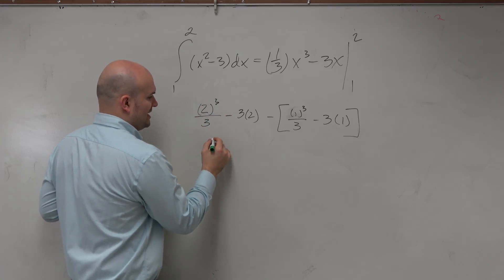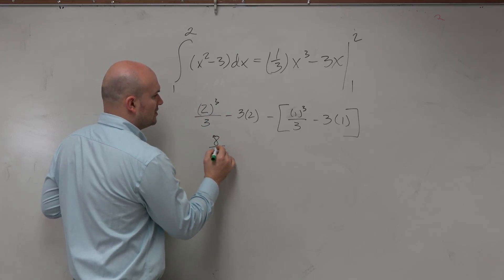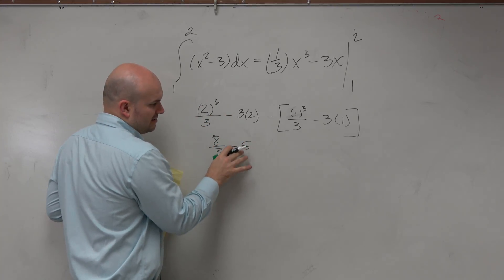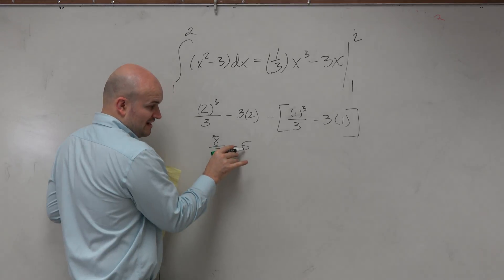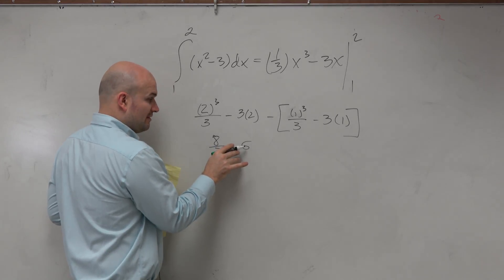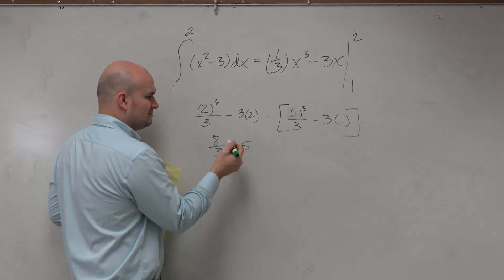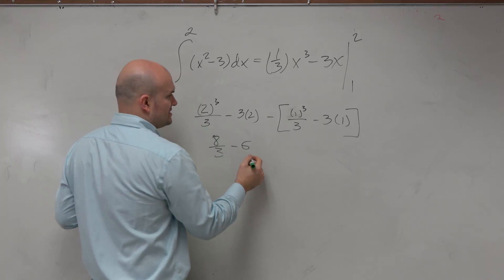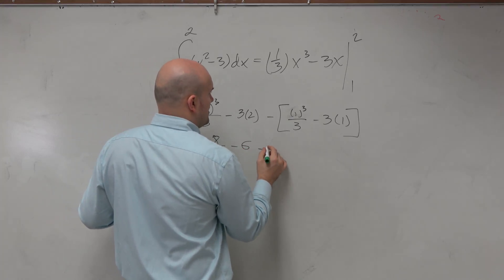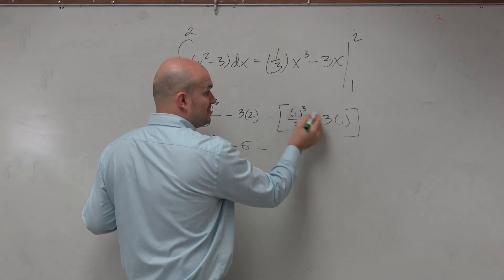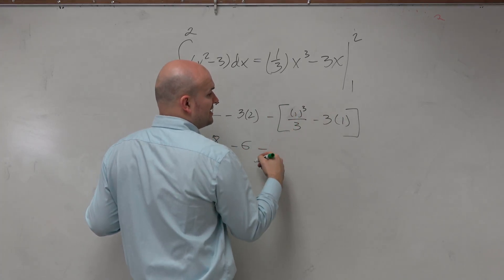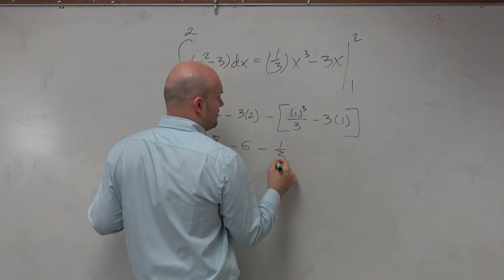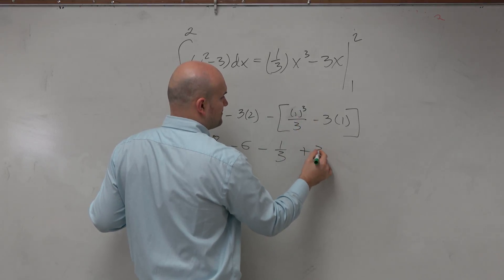2 cubed is going to be 8 over 3 minus 6. And then you distribute to eliminate the parentheses, so that'd be minus 1 third and then plus 3.